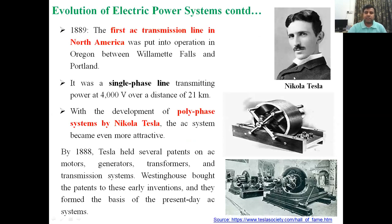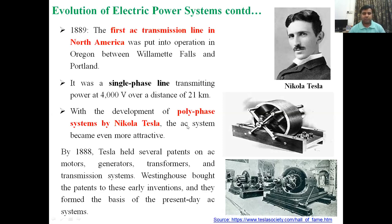Nikola Tesla is the man behind today's AC power system used across the world. Tesla developed the first AC transmission line in North America — it was a single-phase line transmitting power at 4,000 volts over a distance of 21 km. Tesla also developed a polyphase system, and by 1888 he held several patents on the AC motor, generator, and transformers.